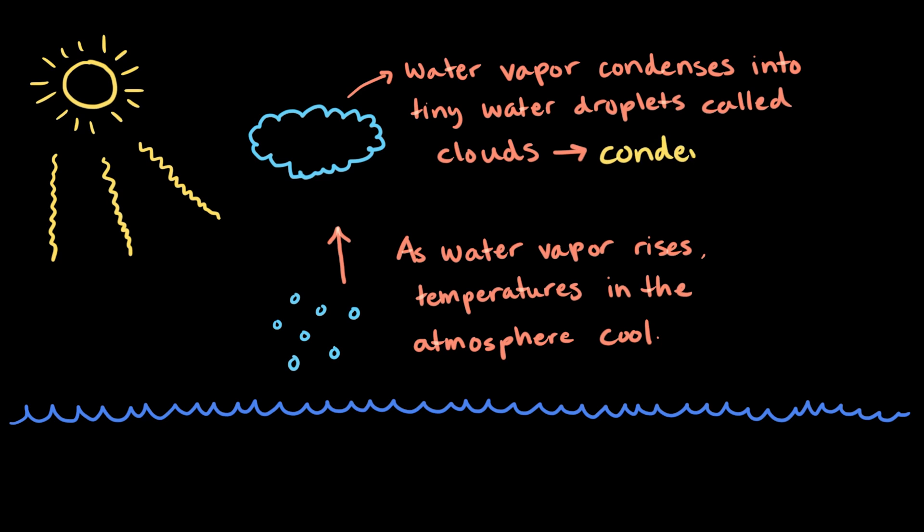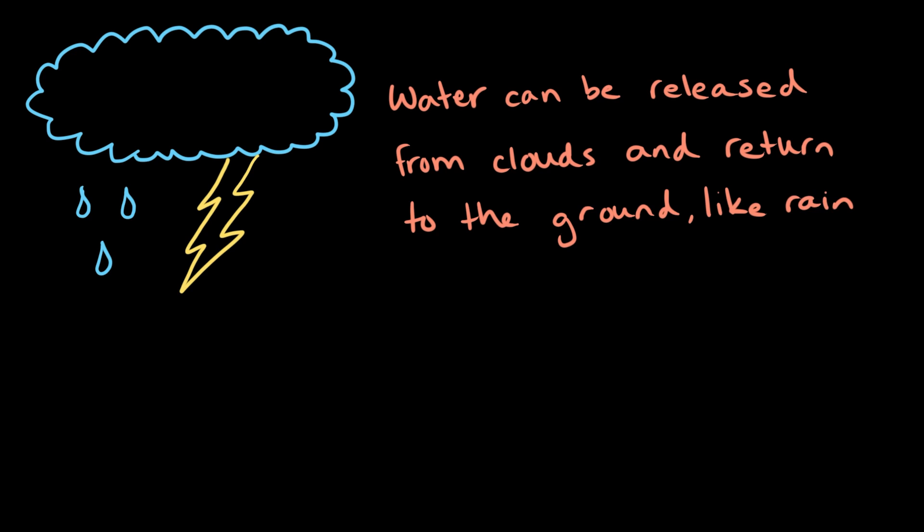Air currents then move these clouds all around the Earth. As a cloud collects more and more liquid water droplets, the water may be released from the cloud, pulled down by gravity, and then returned to the ocean or land as precipitation, like rain.